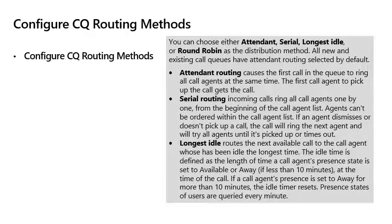Configure call queue routing methods. You can choose either attendant, serial, longest idle, or round robin as a distribution method. All new and existing call queues will have attendant routing selected by default.